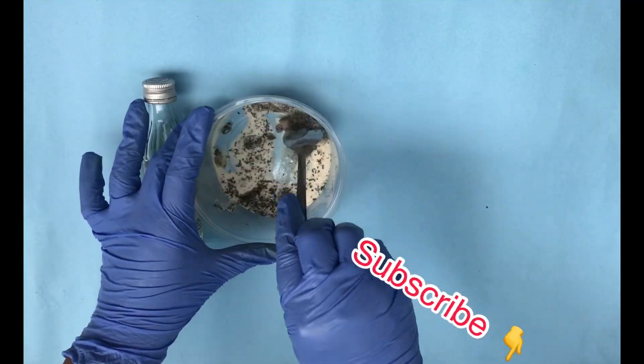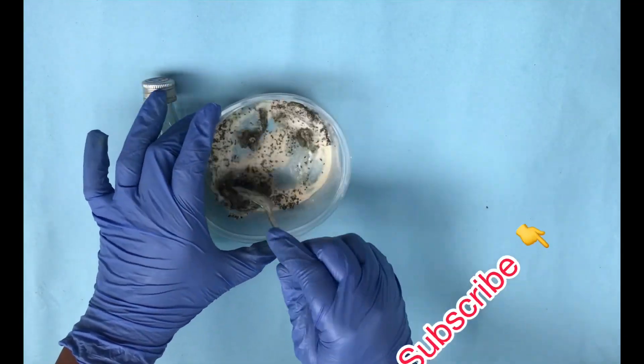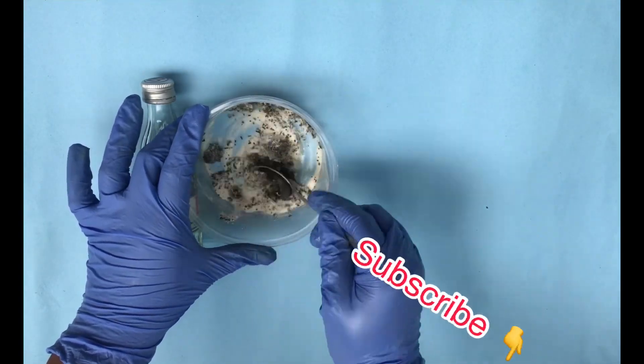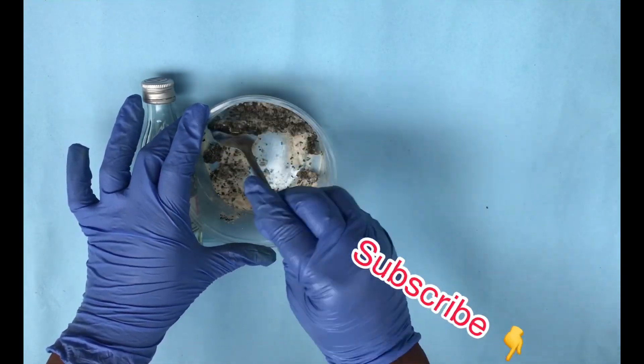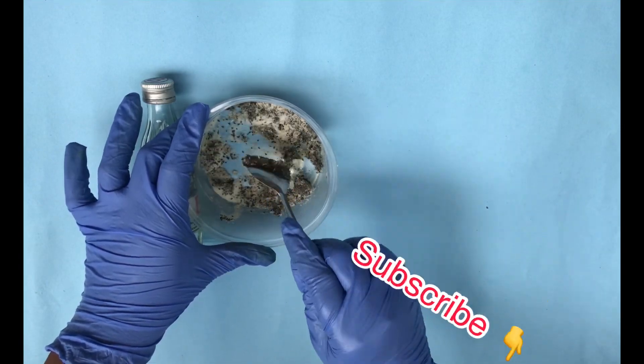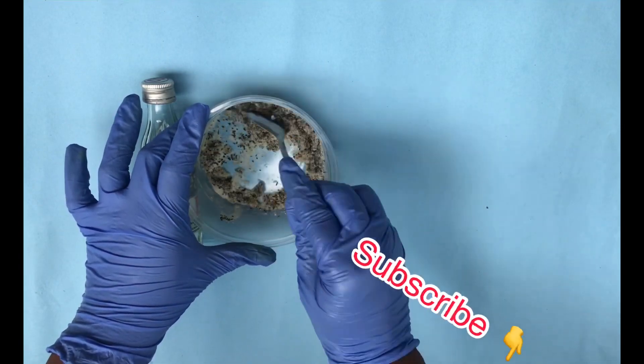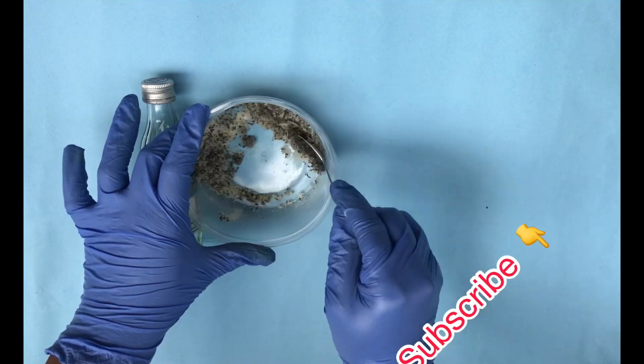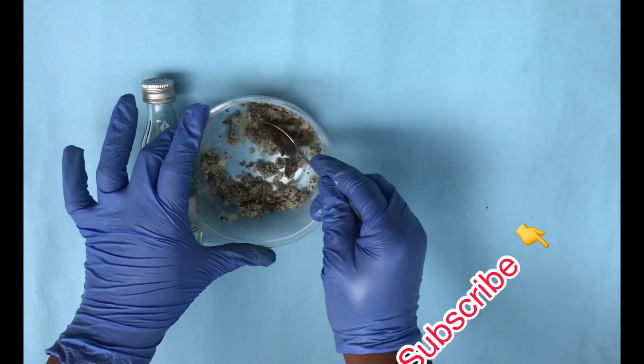Varicose veins are enlarged veins, most commonly appearing in the legs and feet. So if you have varicose veins, you should try out this recipe. It's going to help you get rid of them.